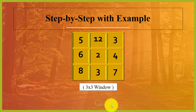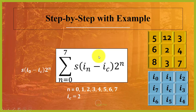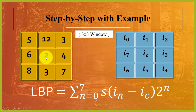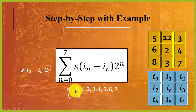Now we are going to compute the LBP code. LBP works on a 3x3 window. Here you can see the center pixel surrounded by neighbor pixels. We put all these values into the equation, where n ranges from 0 to 7. For n=0, i_0 is 5 and the center pixel is 2.